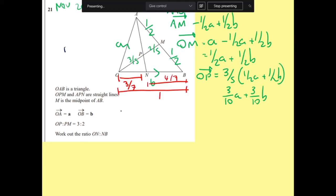Okay, now I'm just going to get a version of AP. So AP, I'm going to go down A and then up to P. So it's going to be minus A and it's going to be the same as OP, which is 3 over 10 A plus 3 over 10 B.